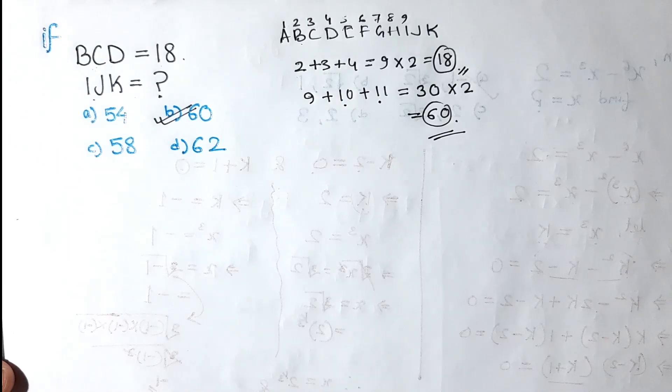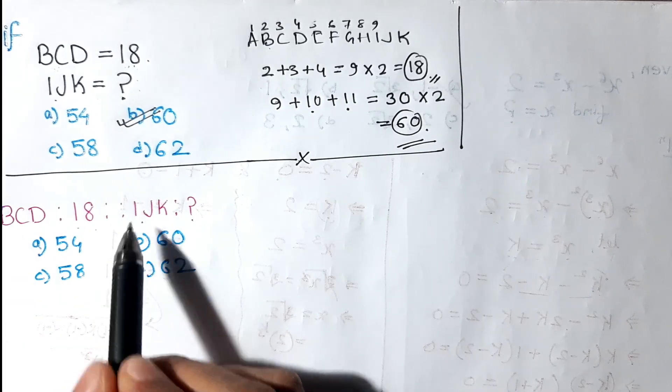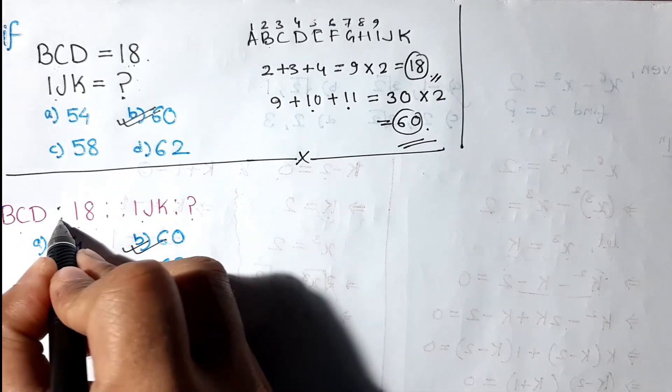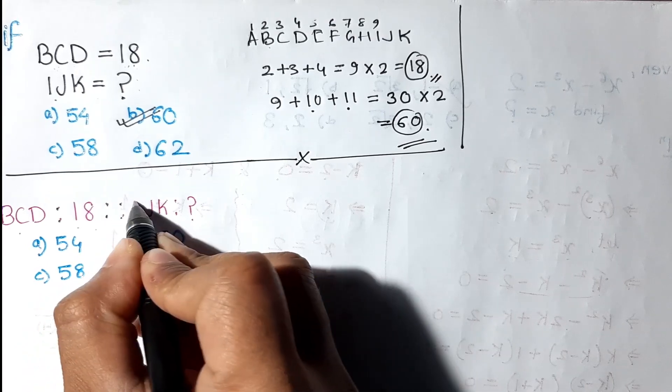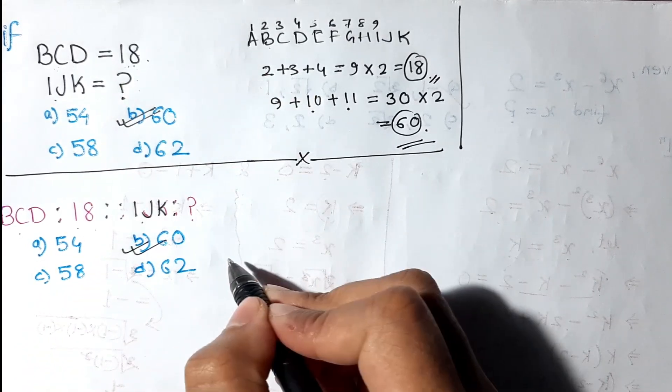This question can be given like this, it is the same. We'll get the same answer, 60. BCD is to 18 in proportion to IJK. Same question, we'll get the same answer, but the format is different.